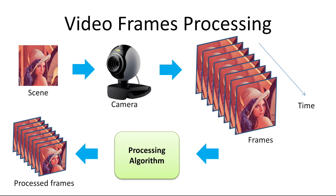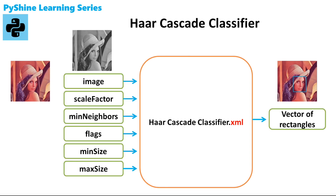The trained model is in XML file format. The name of the model is HAR Cascade Frontal Face Default dot XML. The input to this model is an image frame matrix. It should be noted that this image is in grayscale, so the dimension of the matrix is width times height of the frame. The other input parameters play an important role in detection accuracy and processing speed as well. To find the processing speed of a detection algorithm, we can find the frame rate of the output video.